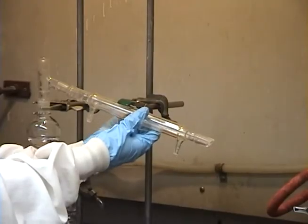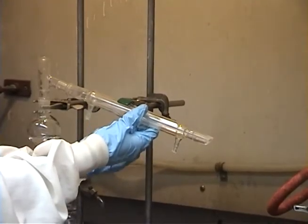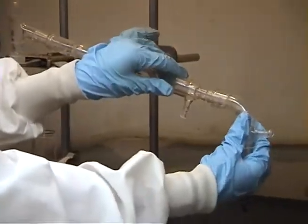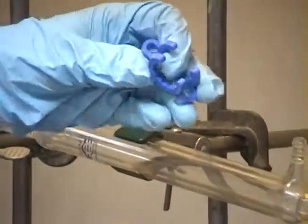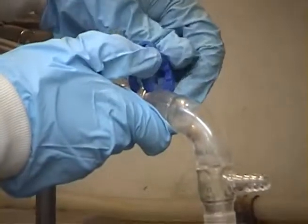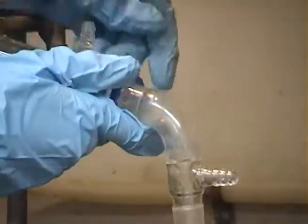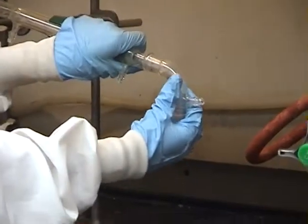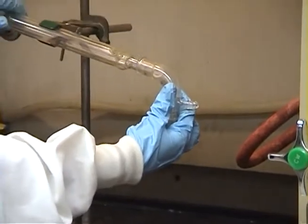On a separate ring stand, clamp the condenser sideways. A vacuum adapter is attached to the lower end of the condenser with a Keck clip. Ensure the openings of the condenser are pointing up.